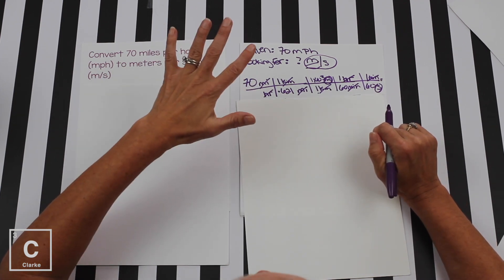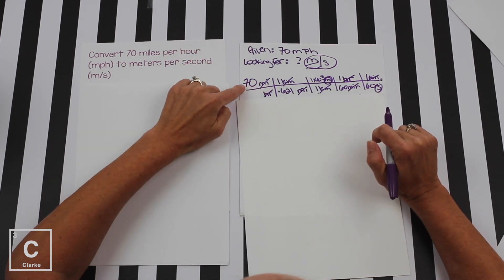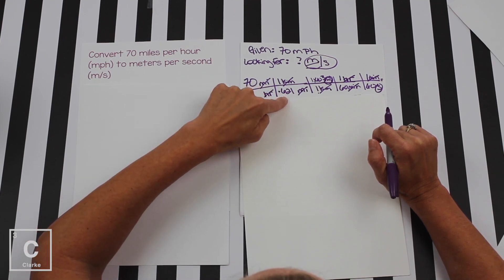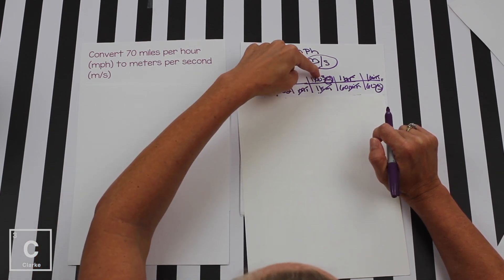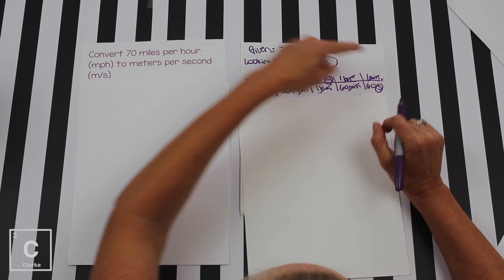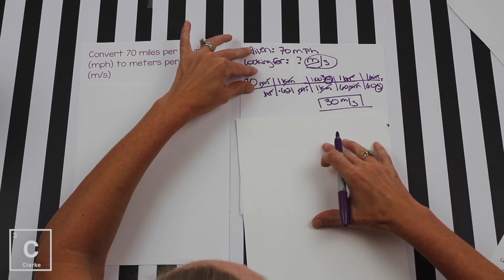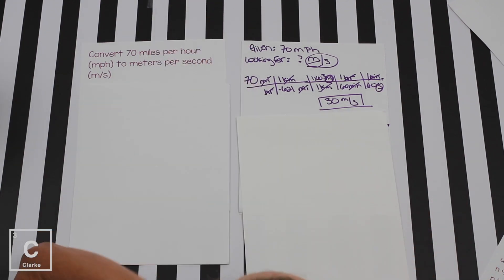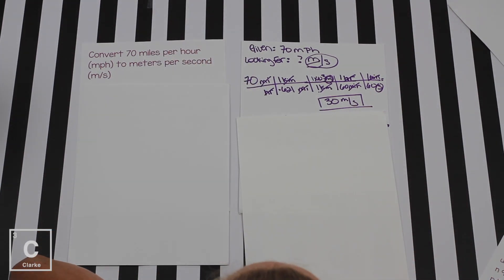We put all this in the calculator. Remember our rules. If it's on top, you multiply. If it's on bottom, you divide. 70 divided by 0.621 times 1 times 10 to the 3 divided by 60 divided by 60. I'm still using sig figs. 30 meters per second. Not so bad, right?